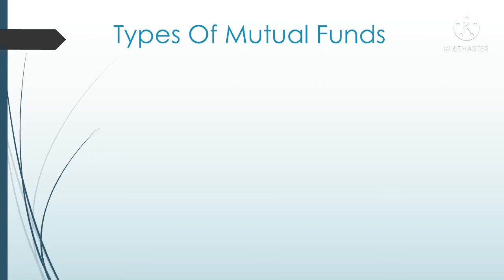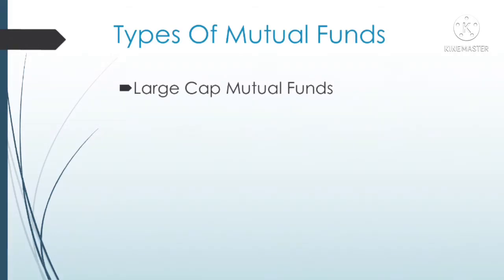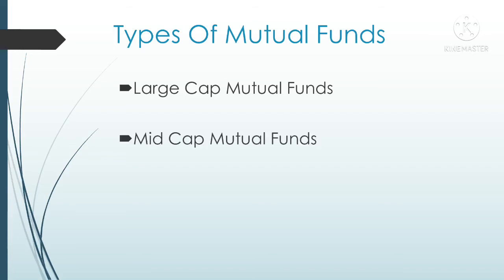Now let's see the types of mutual funds. First, equity mutual funds — there are four types. The first is large cap mutual funds, where the mutual fund house invests your money only in large cap companies, which are companies whose market cap is greater than 20,000 crores. The next is mid-cap mutual funds, where the mutual fund house invests your money in mid-cap companies only — these are companies whose market cap is between 5,000 crores and 20,000 crores.